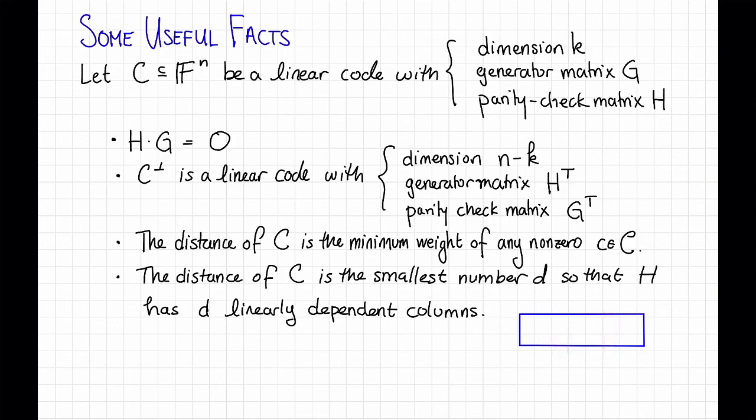and we argued that it sufficed to show that no pair of columns of H were linearly dependent. So that means that the smallest d, so that H has d linearly dependent columns, is 3, and the distance was 3 as well.